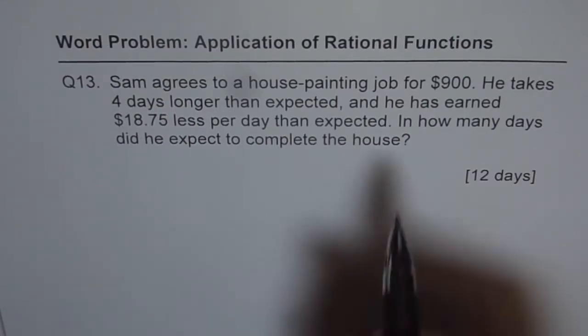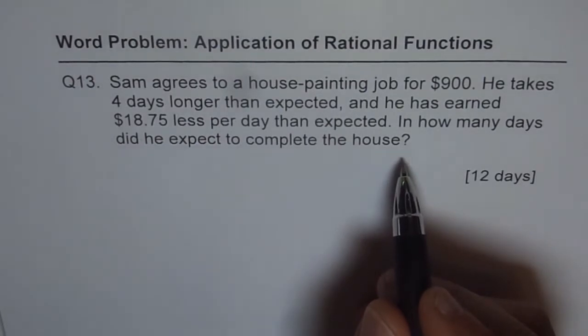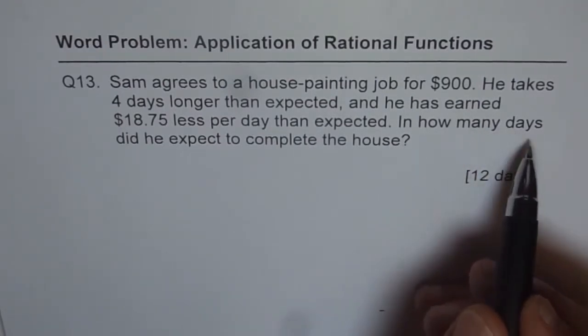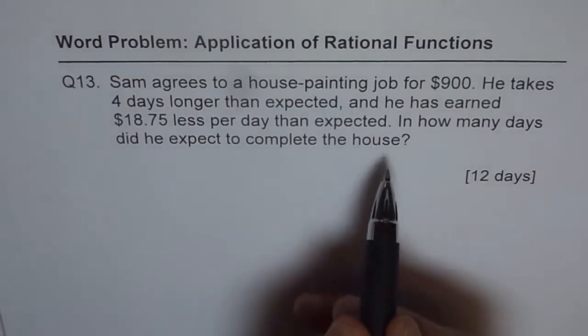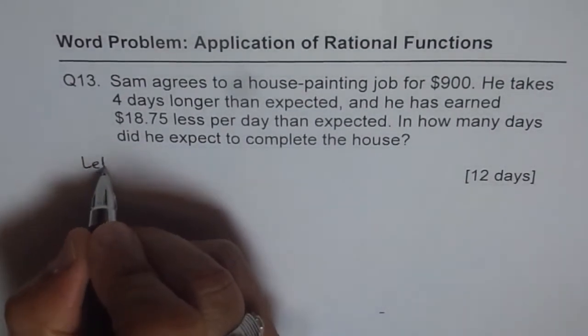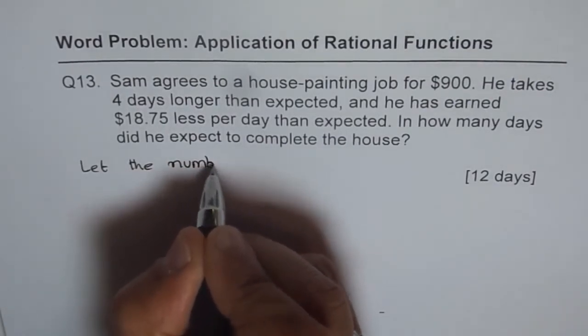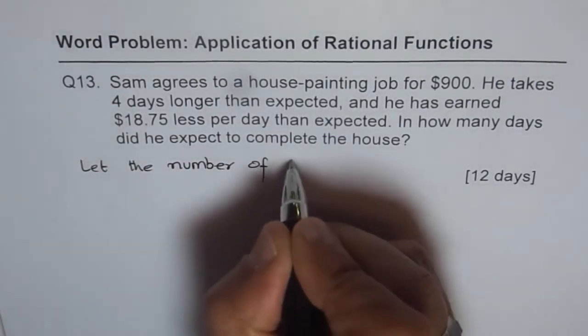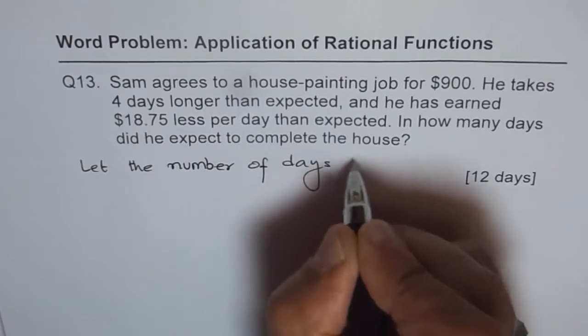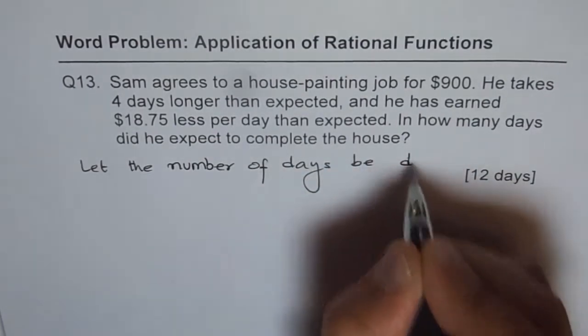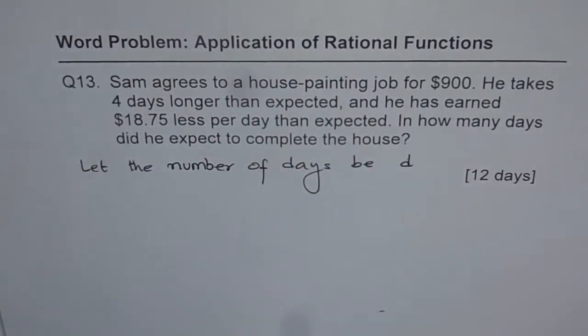So as usual, the last statement is always, most of the time, telling you what we need to find. We don't know, so we define a variable for that. In how many days did he expect to complete the job? So let the number of days be, let's say D this time. So number of days be D. So that is a statement.